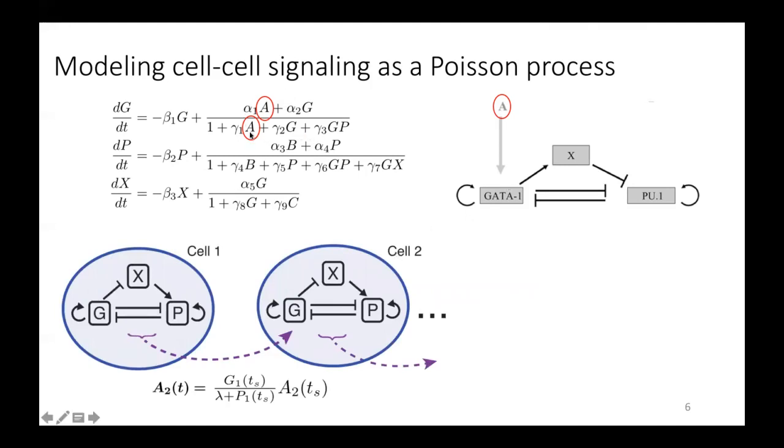So the way that this manifests in our model is, so if we're only changing this parameter A, if in cell one, if GATA1 is more highly expressed than PU1, then we'd expect the value of the parameter A in cell two to increase.